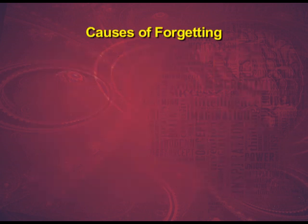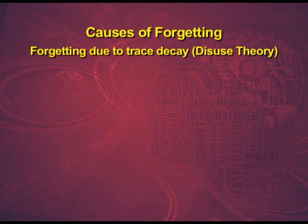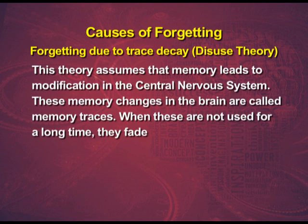Regarding causes of forgetting, the first is forgetting due to trace decay — the disuse theory. This theory assumes that memory leads to modification in the central nervous system. These memory changes in the brain are called memory traces. When these are not used for a long time, they fade. The trace theory of forgetting has been proved inadequate. If forgetting were due to decay of memory traces with disuse, then people going to sleep after memorizing should forget more compared to those who remain awake.